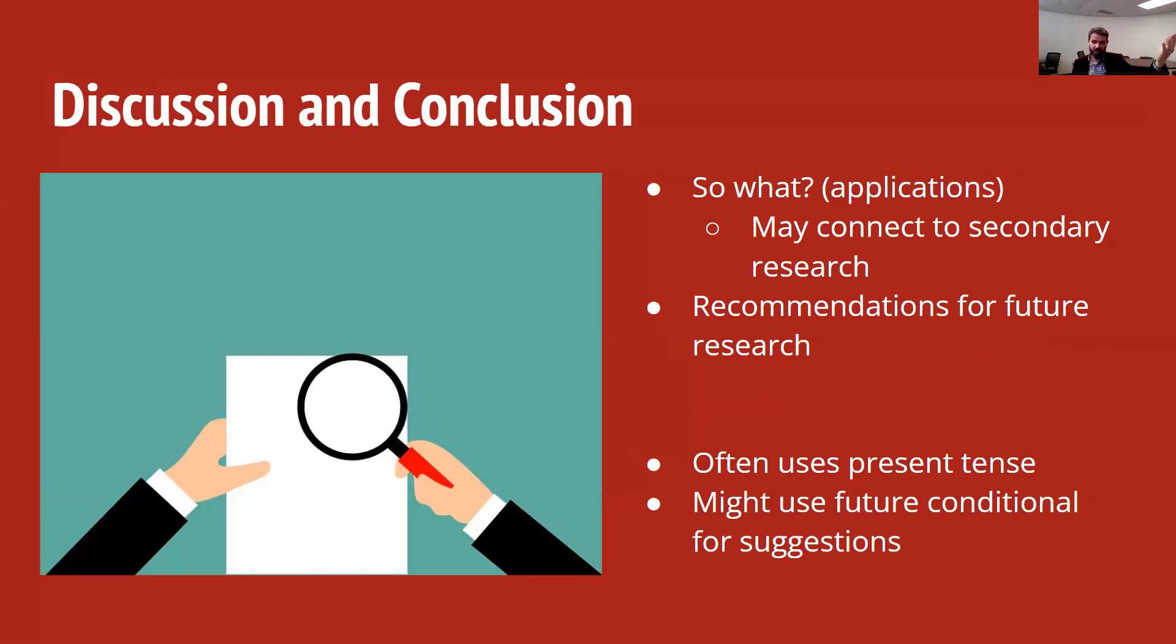The research suggested this, but when I interviewed people, I discovered something that looks different. We also can use the discussion and conclusion section to make recommendations for future research. Maybe we had some problems with our research, so we make some recommendations. I could do this better, or if researchers want to do a study similar to mine, I recommend they do this. Or we could say, I've answered this question, but I still have these questions. So I recommend that researchers in the future look at these topics.